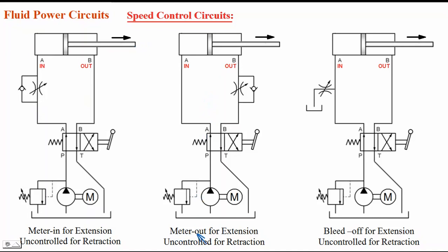In the second circuit — the meter-out circuit — during extension, when the lever is in the first position, P to A and B to T connection is made. Oil flows from P to A into the cylinder, and oil from port B comes out and flows through the flow control valve. Oil coming out of the cylinder is controlled — that is why this is meter-out for extension. When the lever is in the second position, P to B and A to T connection is made, and oil flows to port B through the check valve — free flow — so retraction speed is not controlled.